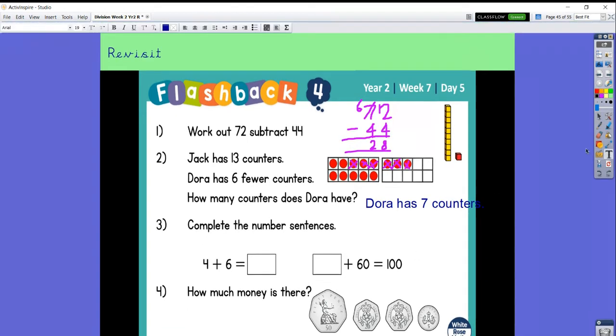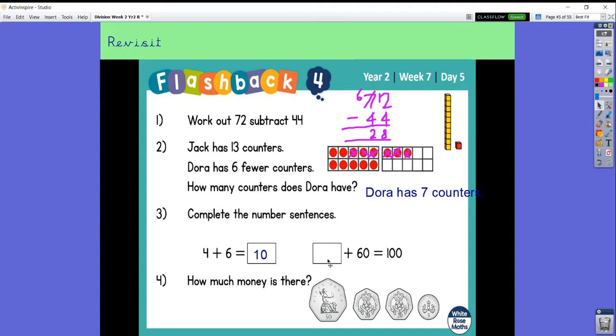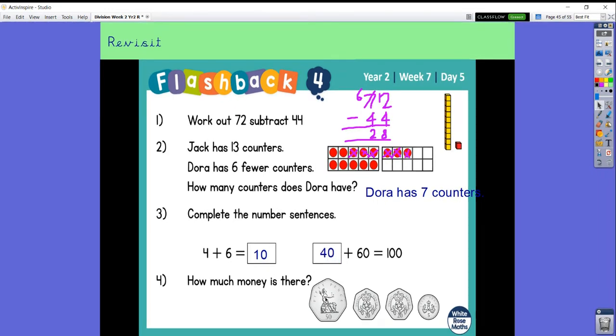Complete the number sentences. Four add six, that's a number bond to ten. So if I know four add six is ten, what do we think? Add sixty makes, that's right, makes a hundred. It's forty add sixty makes a hundred. Oh, I've got some money now. I've got a fifty, twenty, twenty, and a five. Okay, so I'm just going to look at my two twenties together. So that gives me 40p. So I'm going to add my 40p to my fifty. So that's four tens and five tens. That gives me nine tens. So that's ninety. And extra five ones. So I have got ninety five. Not elephants. You must remember that p. Well done.